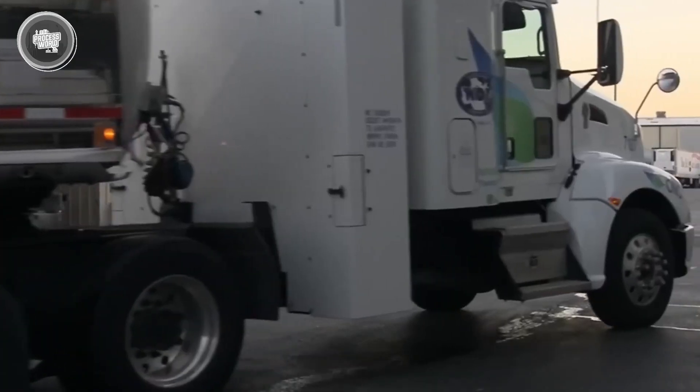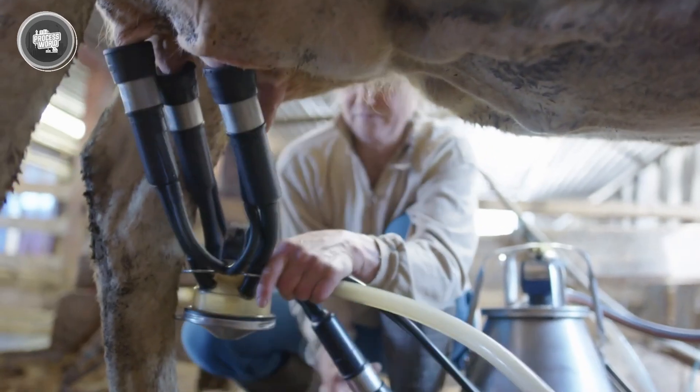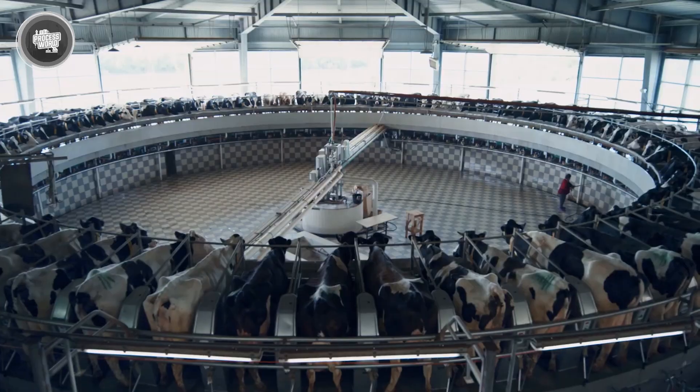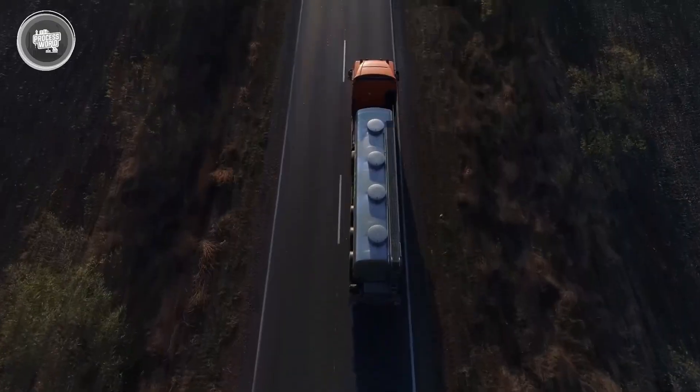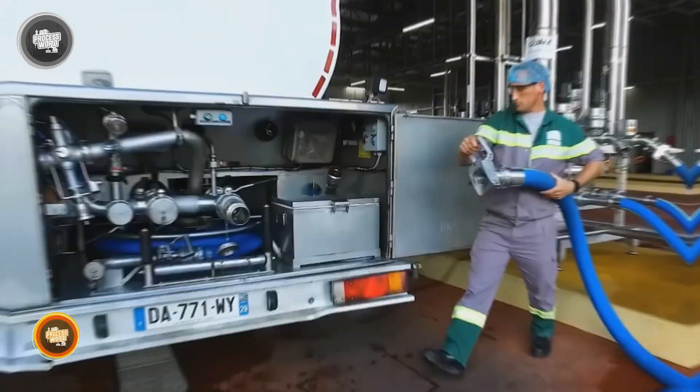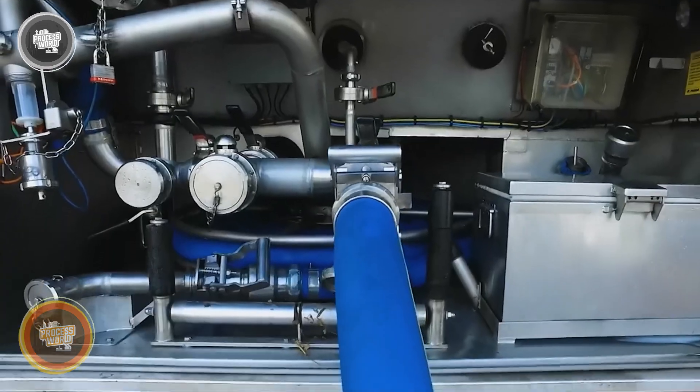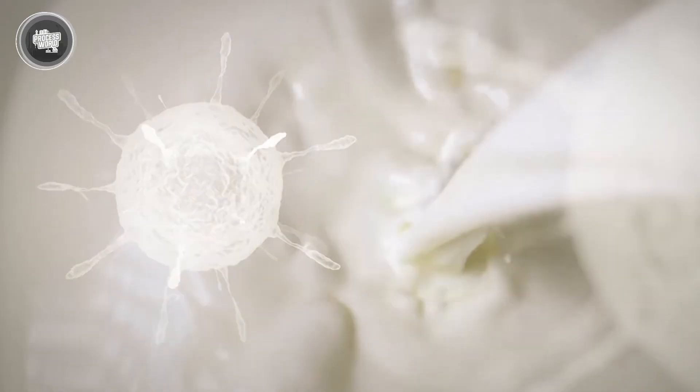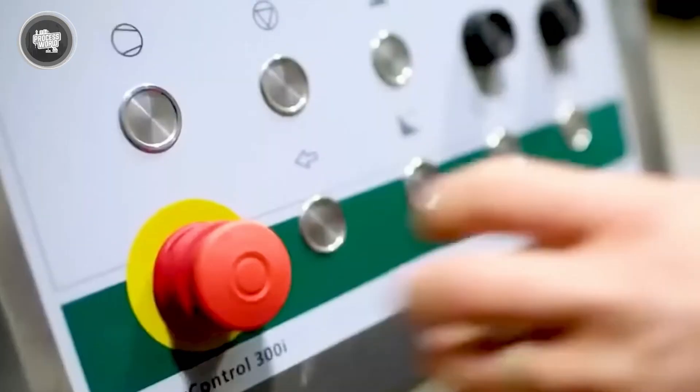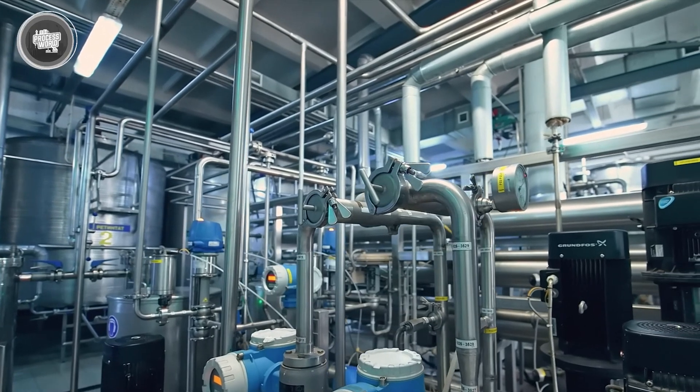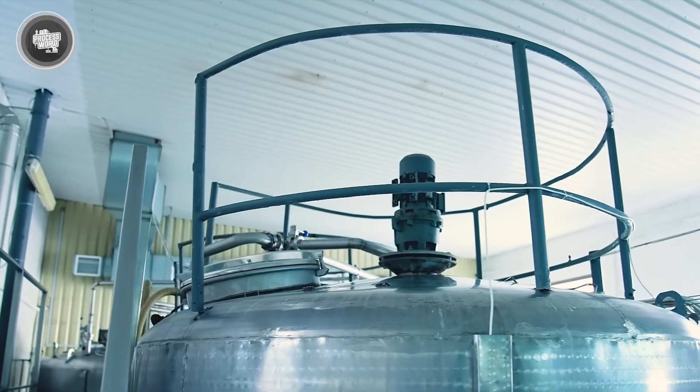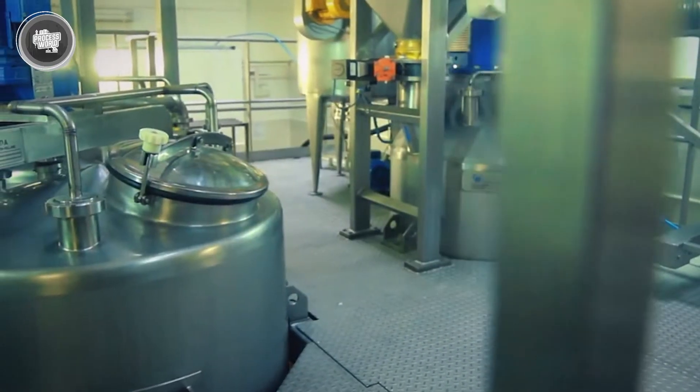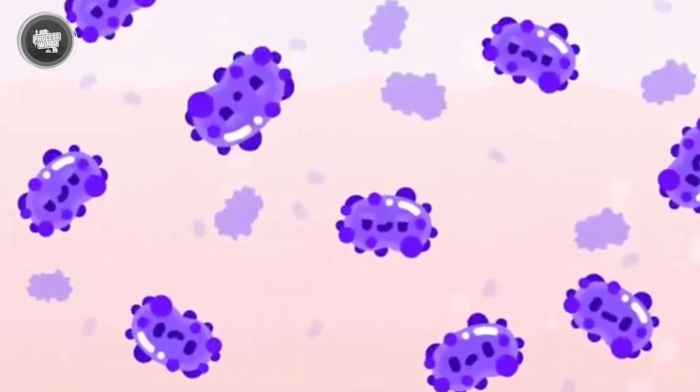The first step in processing is pasteurization. This is a crucial stage where the milk is heated to kill harmful bacteria while keeping its nutrients intact. Without pasteurization, milk would spoil quickly and could carry bacteria that make it unsafe to drink. The process begins as milk is pumped through stainless steel pipes into a heat exchanger. The machine rapidly heats the milk to 72 degrees Celsius and holds it at that temperature for 15 seconds. That short burst of heat is enough to destroy 99 percent of the bacteria, making it safe for longer storage.